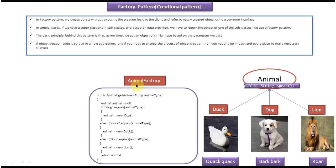In that animal factory class, we have to write a get animal method. This will return the super class reference, and here you have to pass the animal type. So in this get animal method, you pass the animal type, and based on the animal type passed, it will create the corresponding animal object and return it. For example, if you pass animal type as dog, then it will create the new dog object and assign it to the animal super class reference, and finally that animal super class reference will be returned to the caller.